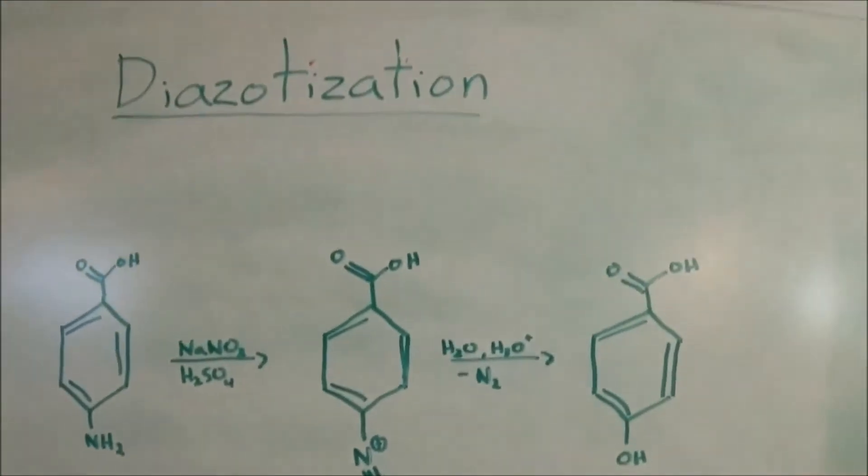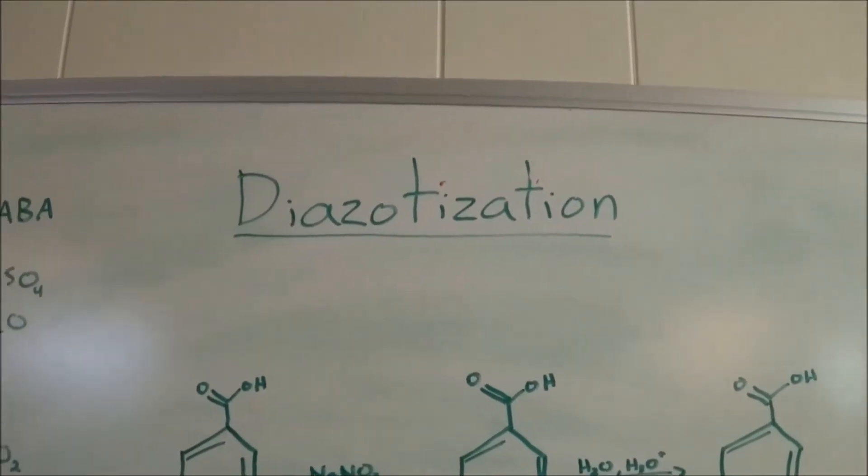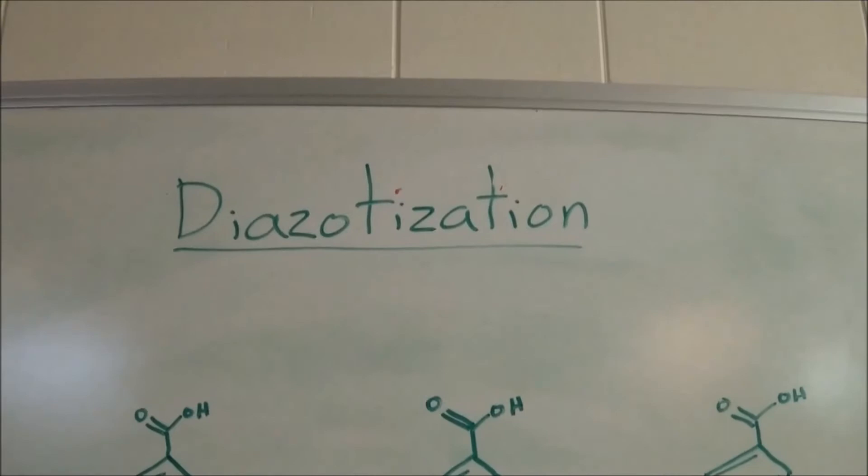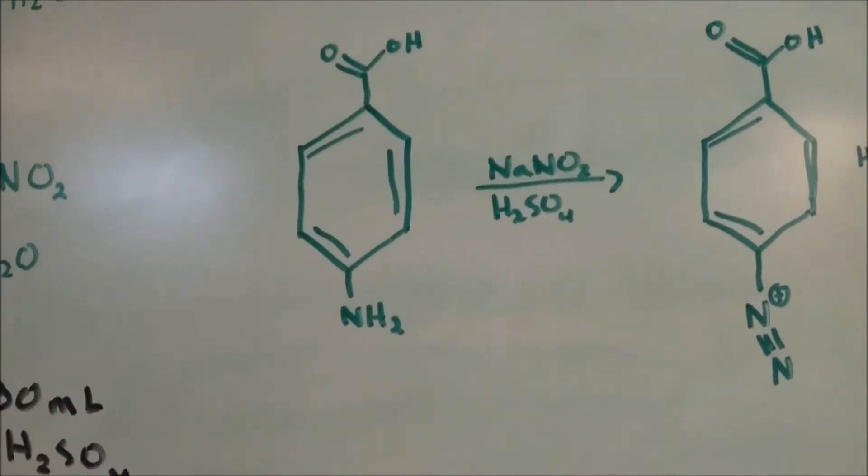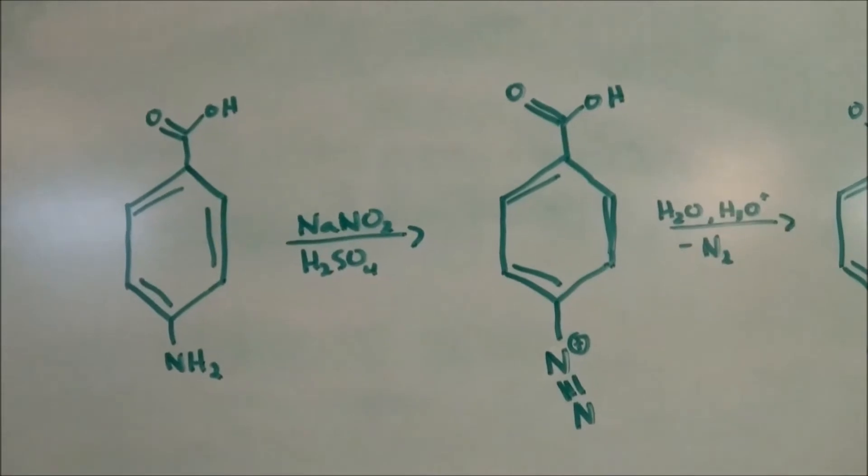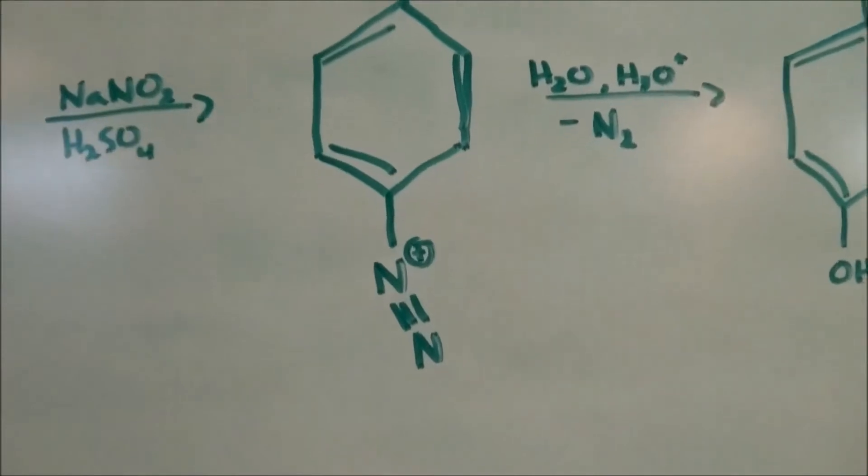Personally, I find the process I use in this video to be much more interesting than the product, and that process is diazotization. This is where a primary amine reacts with nitrous acid in an acidic solution to produce the diazonium salt you see here.